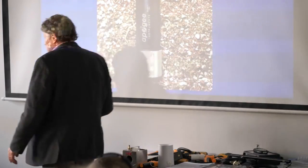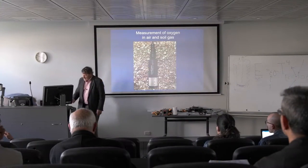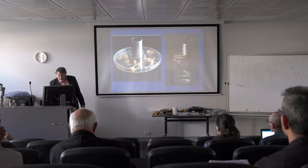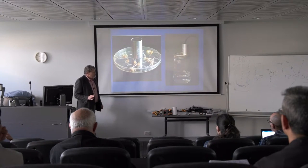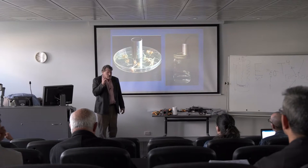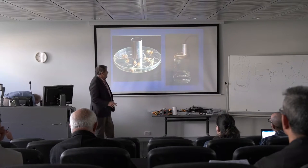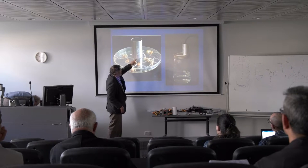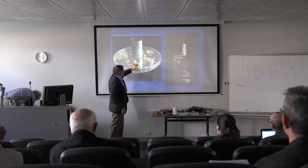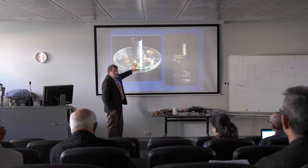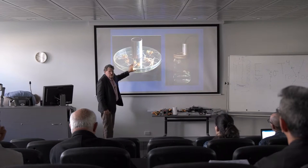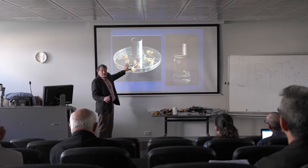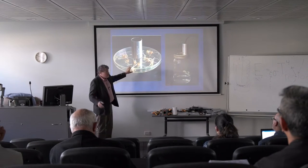Here's one application in the lab — we've used this quite a bit in my lab. Here's a petri dish, sealed. You drill a tiny hole, put the sensor in there, and we're measuring the change in oxygen in this petri dish, which is an indication of the metabolic rate of these seeds.